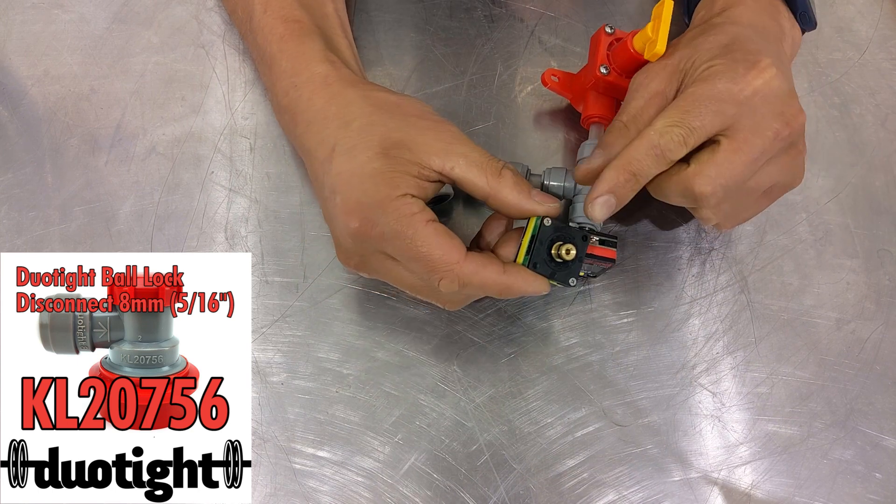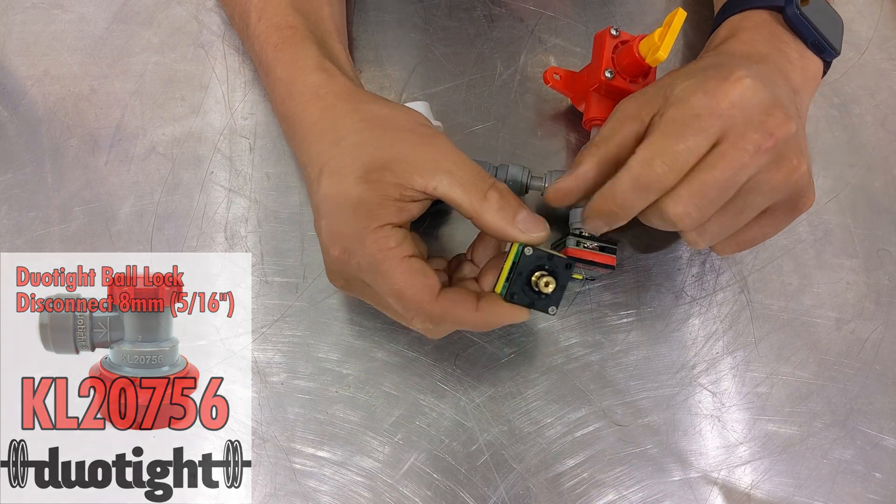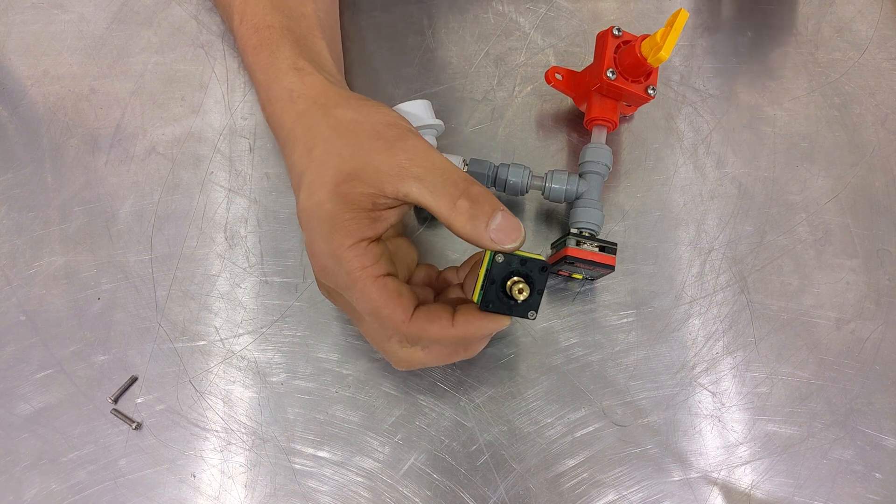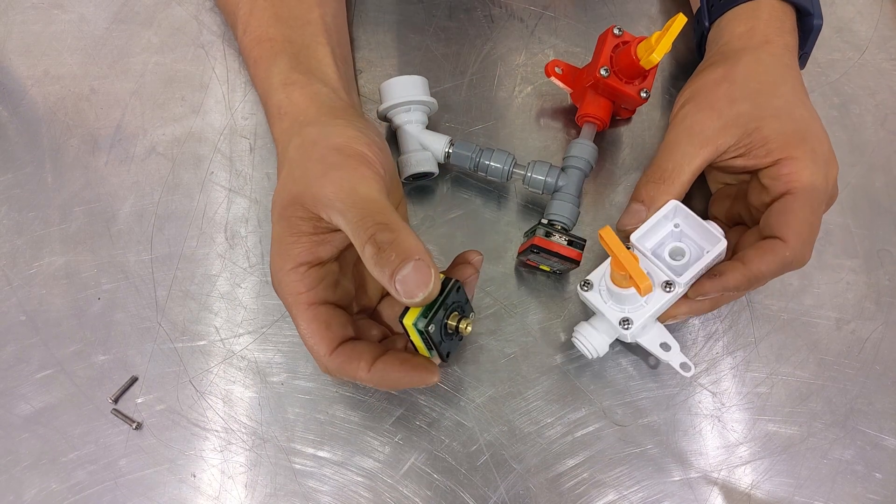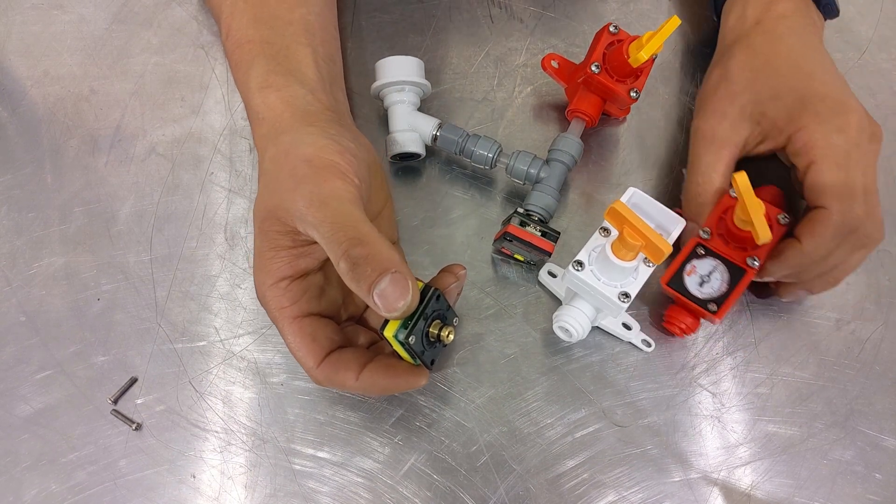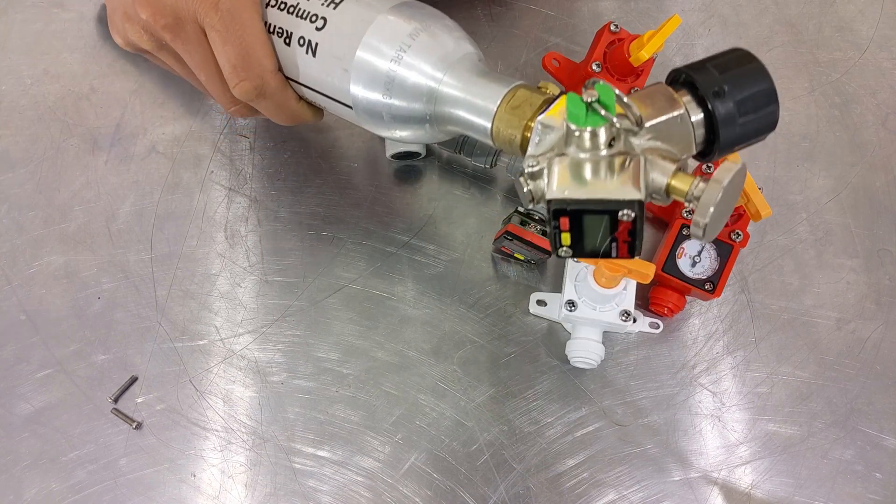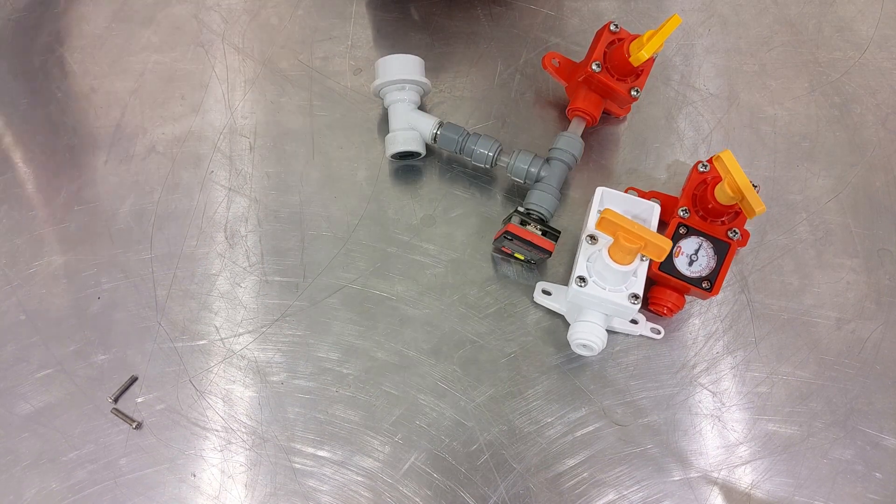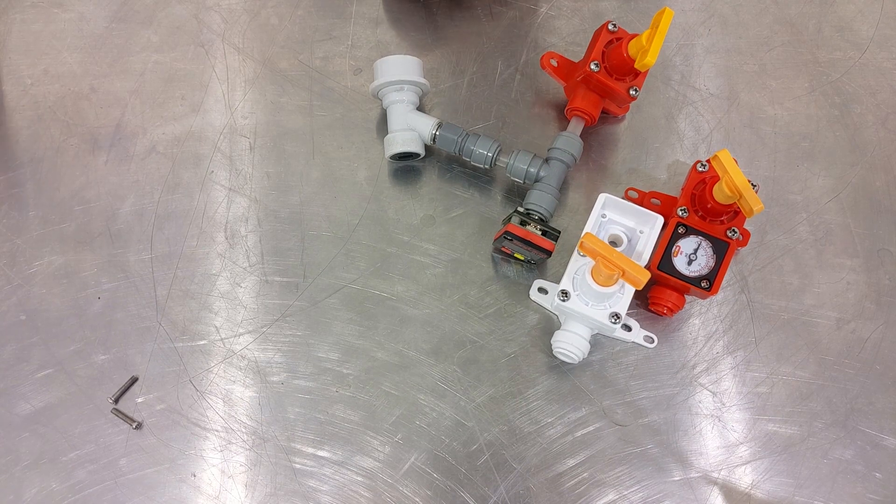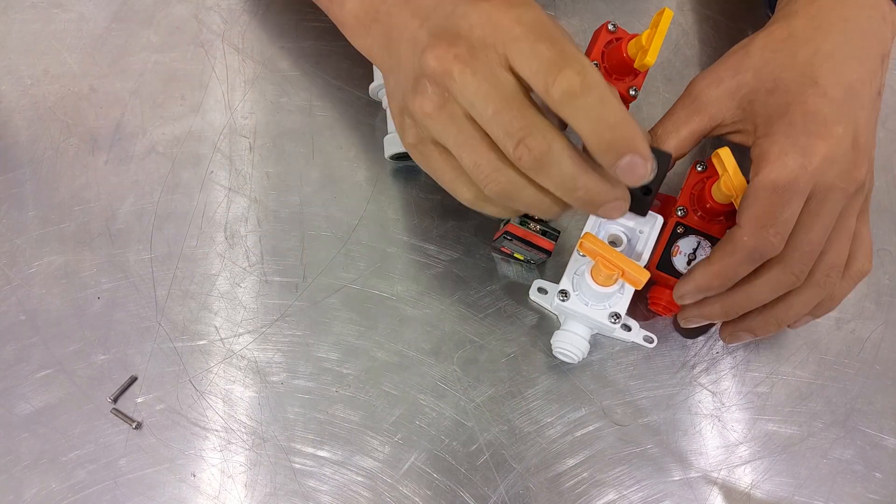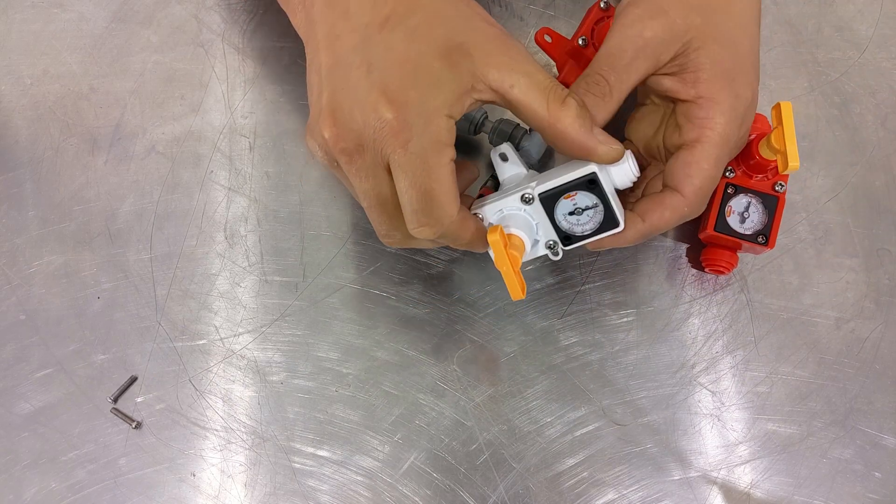The other gauge that we've got has a radial o-ring seal. This particular one is the one that suits things like this regulator here, or things like the blow tie, or even this Core360 regulator here.